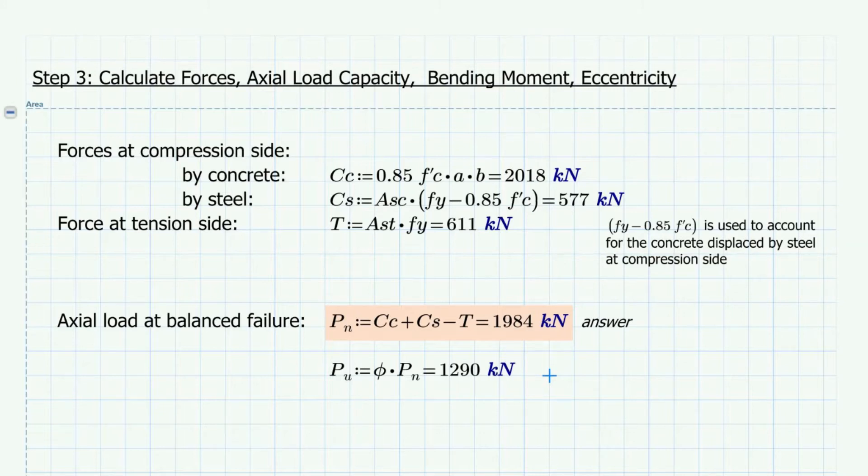We can also calculate the ultimate axial strength using the strength reduction factor calculated earlier. This gives us the value of 1290 kN.